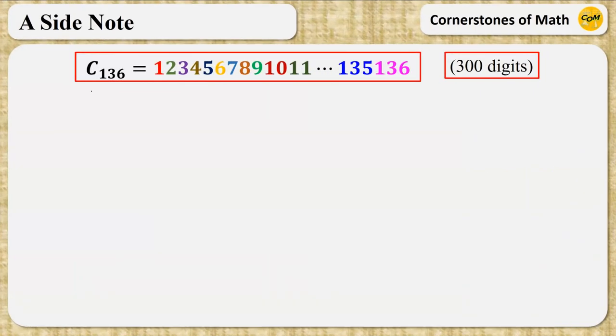And we can find more values for n where the number of digits of Cn are multiples of 100. Because writing 100 more natural numbers will provide exactly 300 digits, making the resulting number of digits still a multiple of 100.